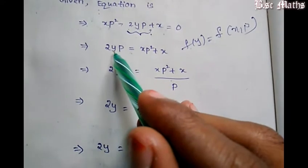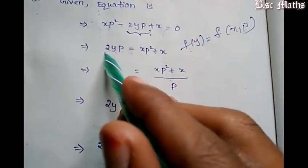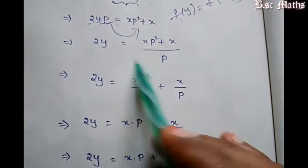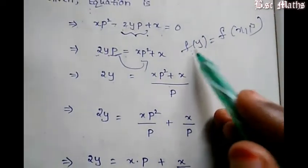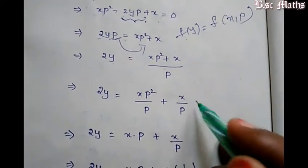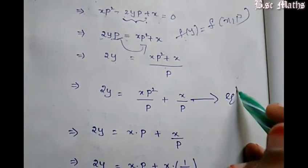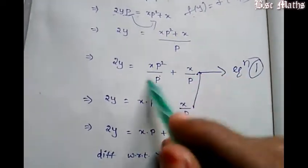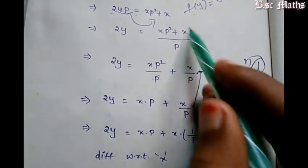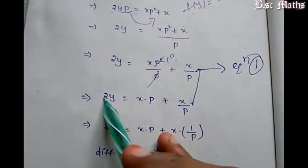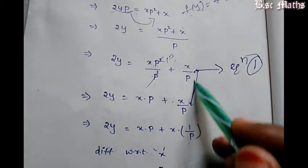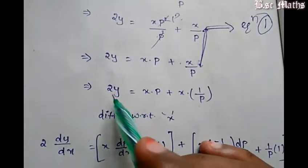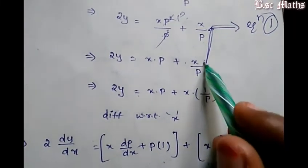We show the p value and divide. So dy equals xp squared plus x by p divided by 2, giving f of y equals xp squared plus x by p. So 2y equals x into p plus x into 1 by p — this is equation number 1.